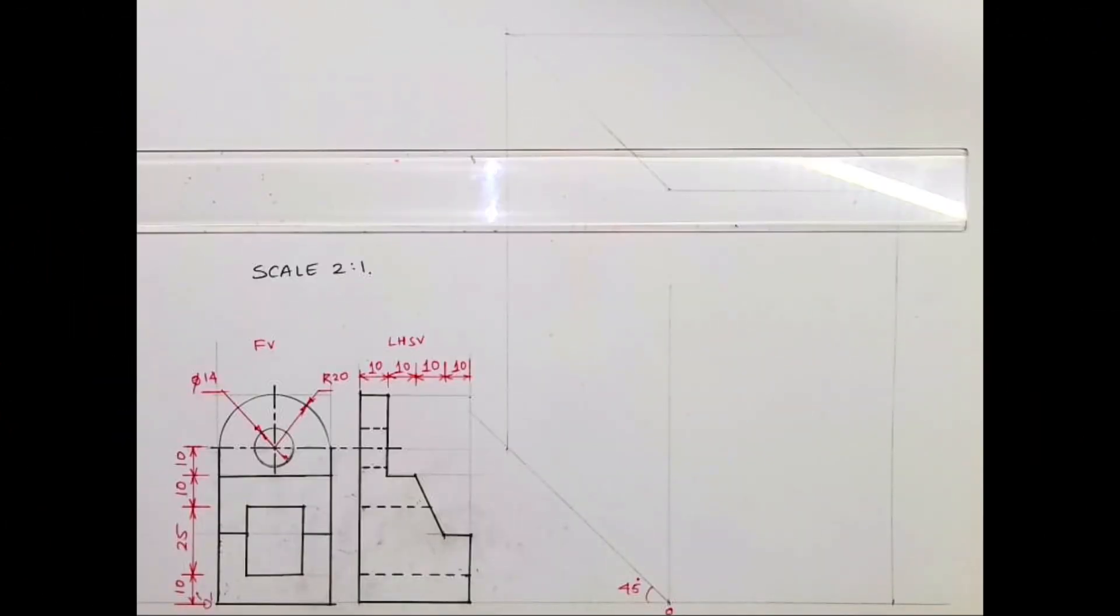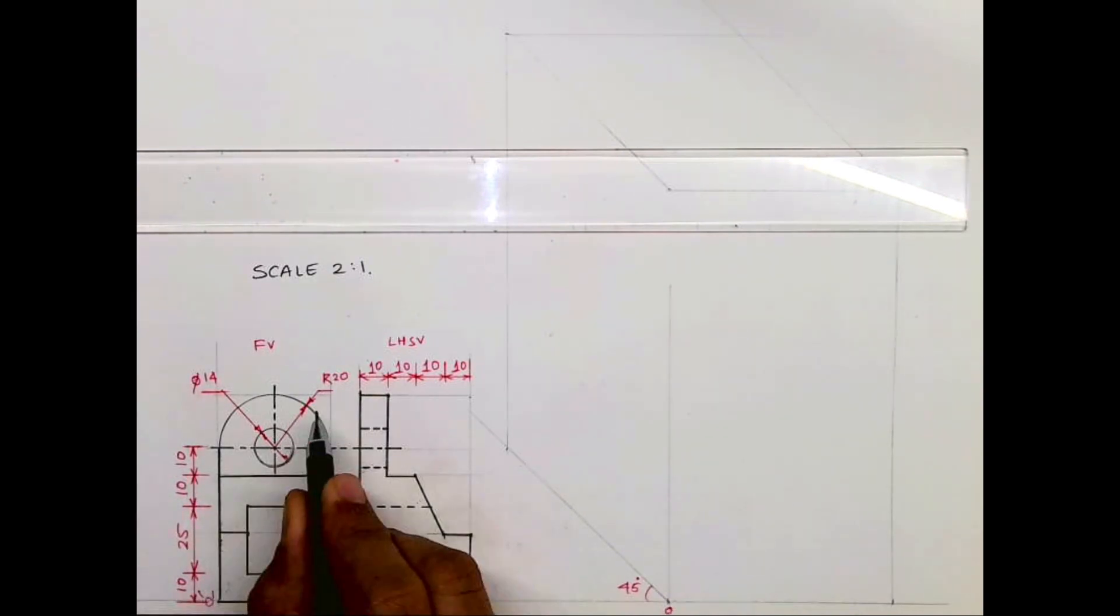Welcome to technical drawing. Today we will see this sum in oblique. Now in this sum, scale is 2:1, that means we have to multiply all dimensions by 2 and then solve.